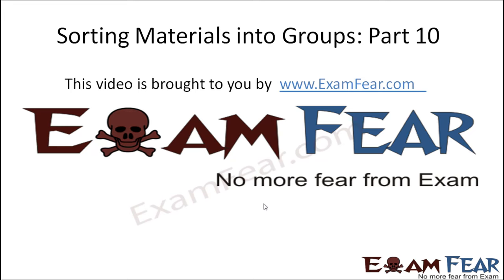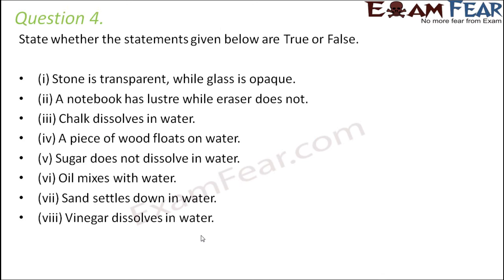This video on sorting materials into groups part 10 is brought to you by examfear.com. Question number 4: state whether the statements are true or false. Stone is transparent while glass is opaque — this is absolutely false, because glass is transparent and stone is opaque.